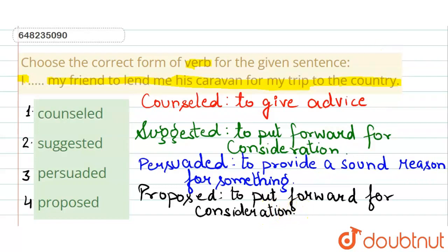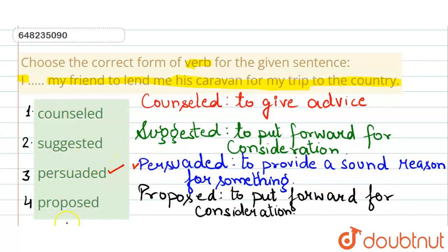Now, according to our sentence: 'I ___ my friend to lend me his caravan for my trip to the country.' Here, option three — 'persuaded' — is the most suitable, because it means I pleaded with or convinced my friend, giving him a sound reason to lend me his caravan. So option three, 'persuaded,' is the correct answer.